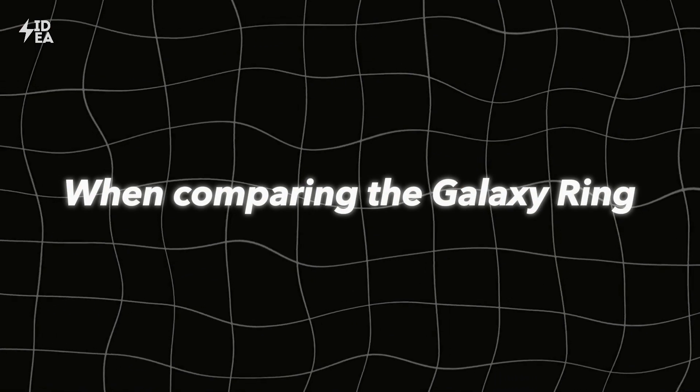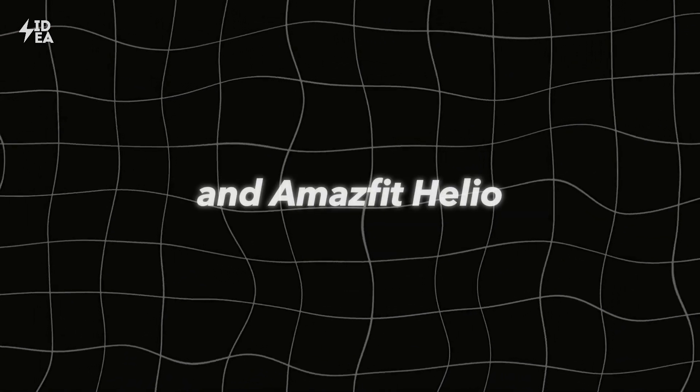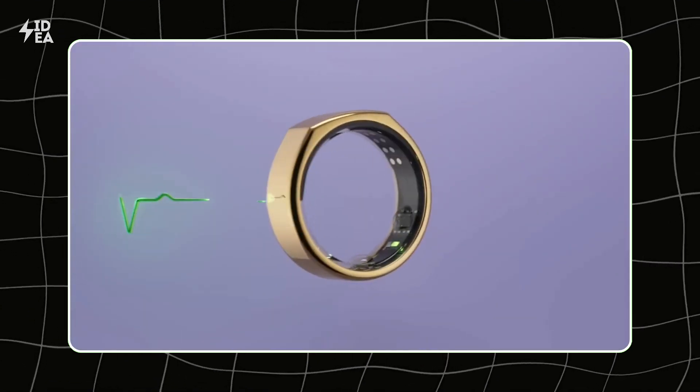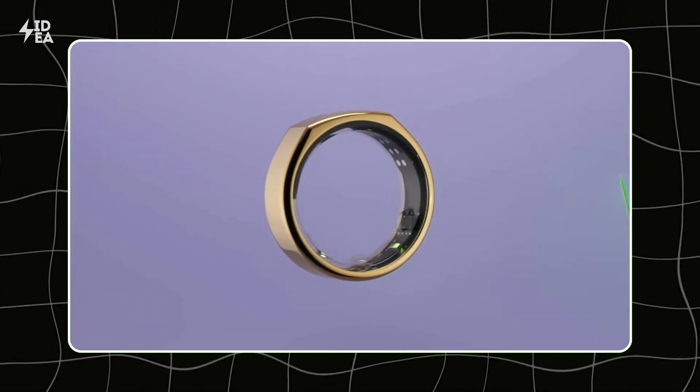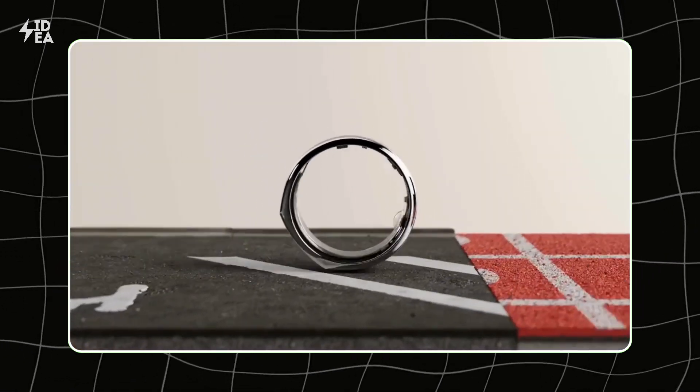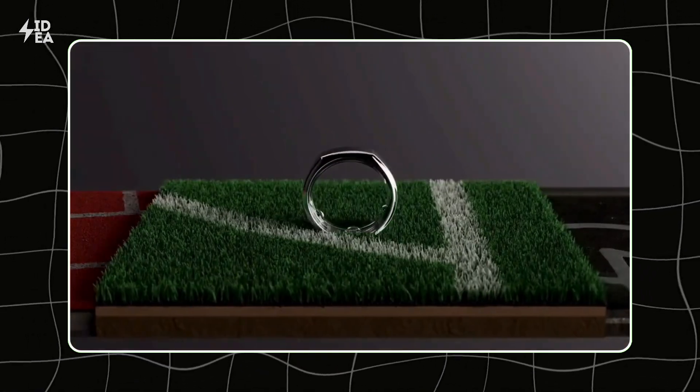When comparing the Galaxy Ring to rings like the Oura and Amazfit Helio, each has unique features. The Oura Ring is renowned for its advanced health tracking capabilities, monitoring a comprehensive range of health metrics such as heart rate variability, sleep stages, body temperature, and more.